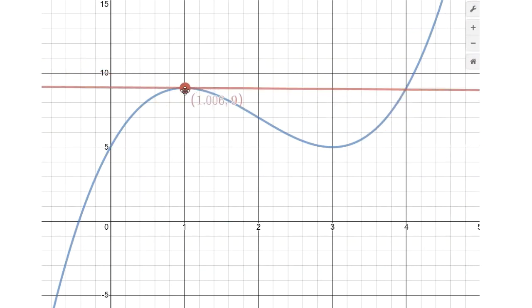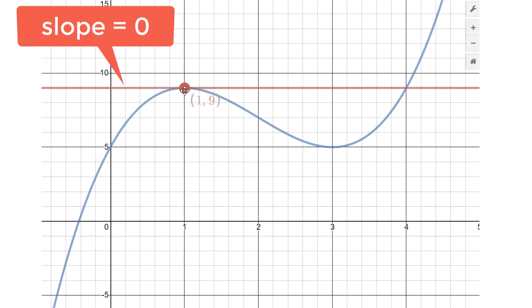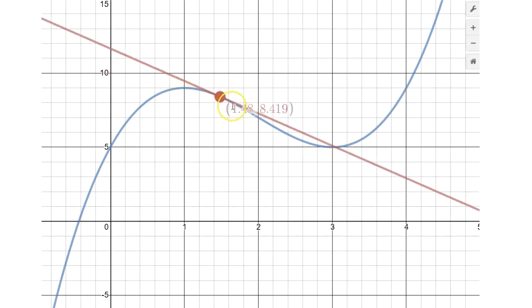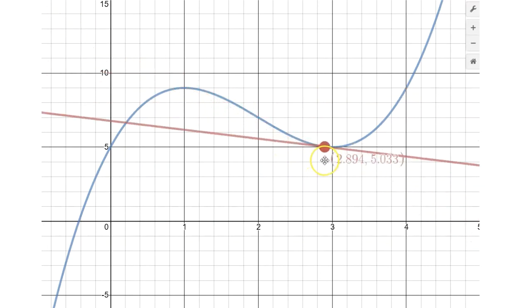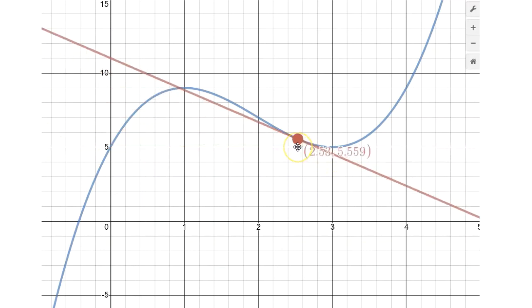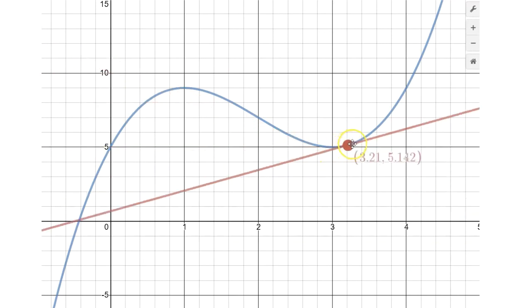And that switch happens right here at zero. And so the point at this location is one nine. And then if we move over we have another interesting location right about here where the slope of the tangent line went from being negative to being positive.